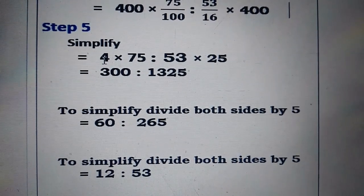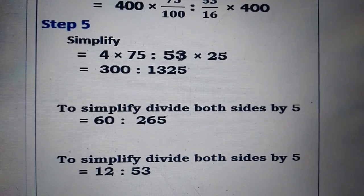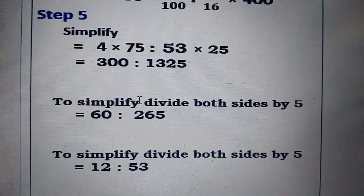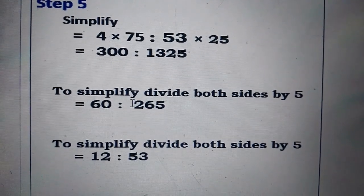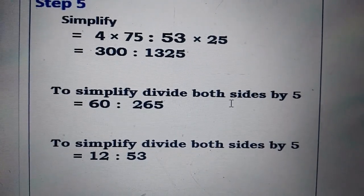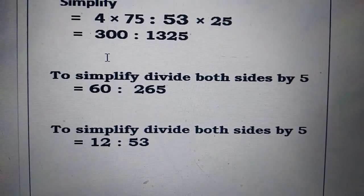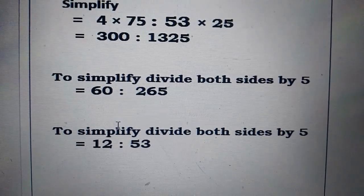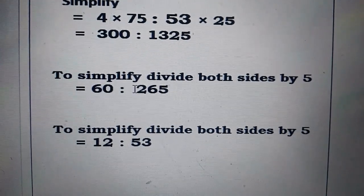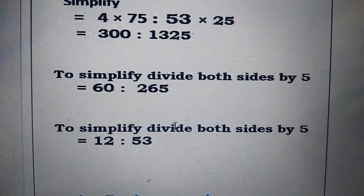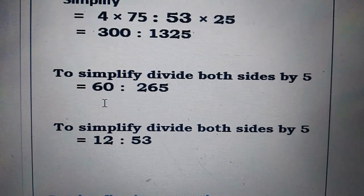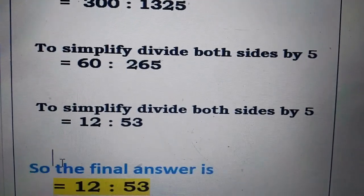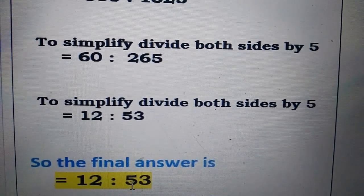Multiplying seventy-five by four gives three hundred. Multiplying fifty-three by twenty-five gives one thousand three hundred and twenty-five. So we have three hundred ratio one thousand three hundred and twenty-five. Both are divisible by five, so we divide to get sixty ratio two sixty-five. Both are again divisible by five, so dividing again: sixty by five gives twelve, and two sixty-five by five gives fifty-three. The final answer is twelve ratio fifty-three.